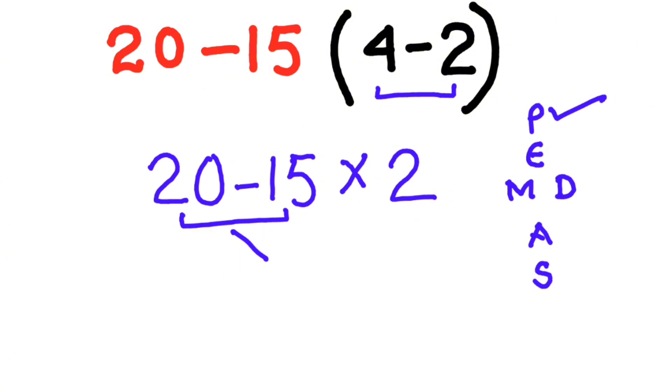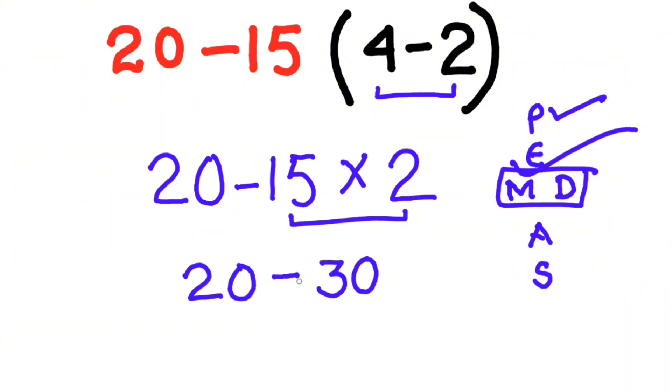Now solving 20 minus 15 first would be wrong, because we have to solve multiplication first. So 15 times 2 equals 30. Then 20 minus 30 equals minus 10. So minus 10 is our correct answer.